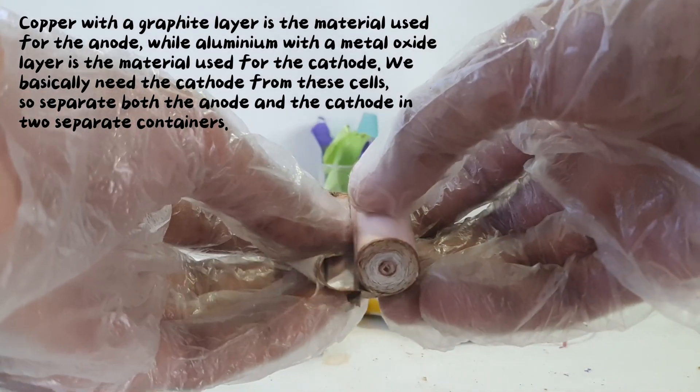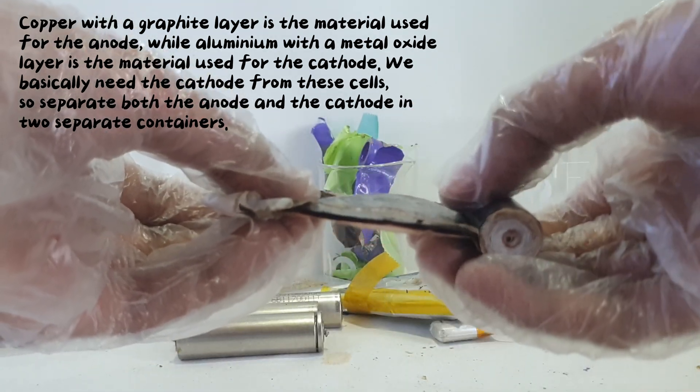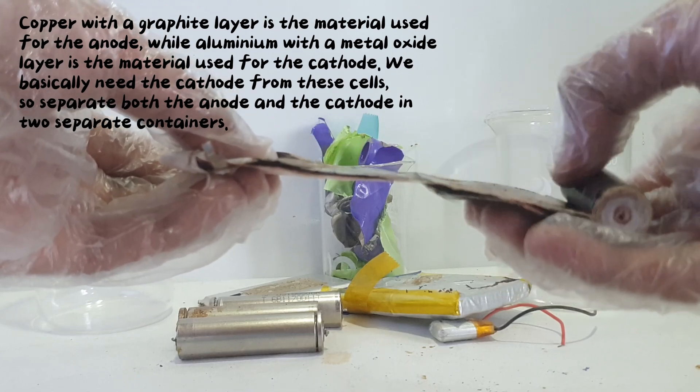Copper with the graphite layer is the material used for the anode, while aluminum with the metal oxide layer is the material used for the cathode. We basically need the cathode from these cells.